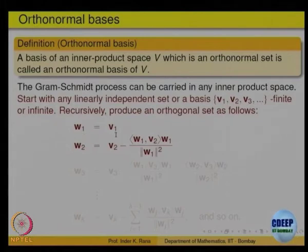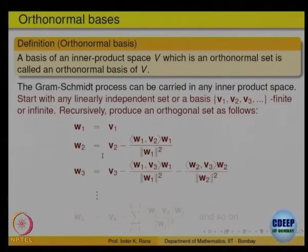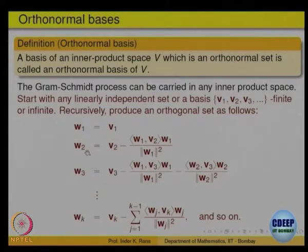If V1 is nonzero, define W1 = V1. Then inductively, W2 is obtained by removing the projection of V2 onto W1 — so W1 and W2 will be perpendicular. W3 is obtained from V3 by removing the projections onto the previously defined vectors. If you carry on that process up to any k, you get vectors W1, W2, ..., Wk which are mutually orthogonal, and the space spanned by them is the same as the space spanned by V1, V2, ..., Vk. That is what we have done for finite dimension.